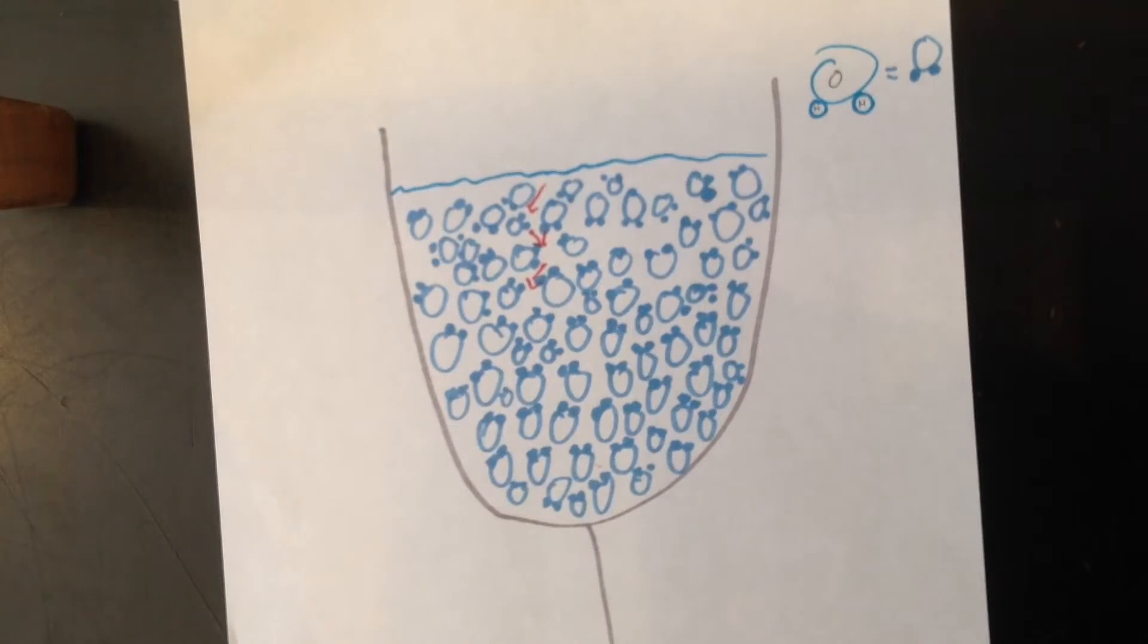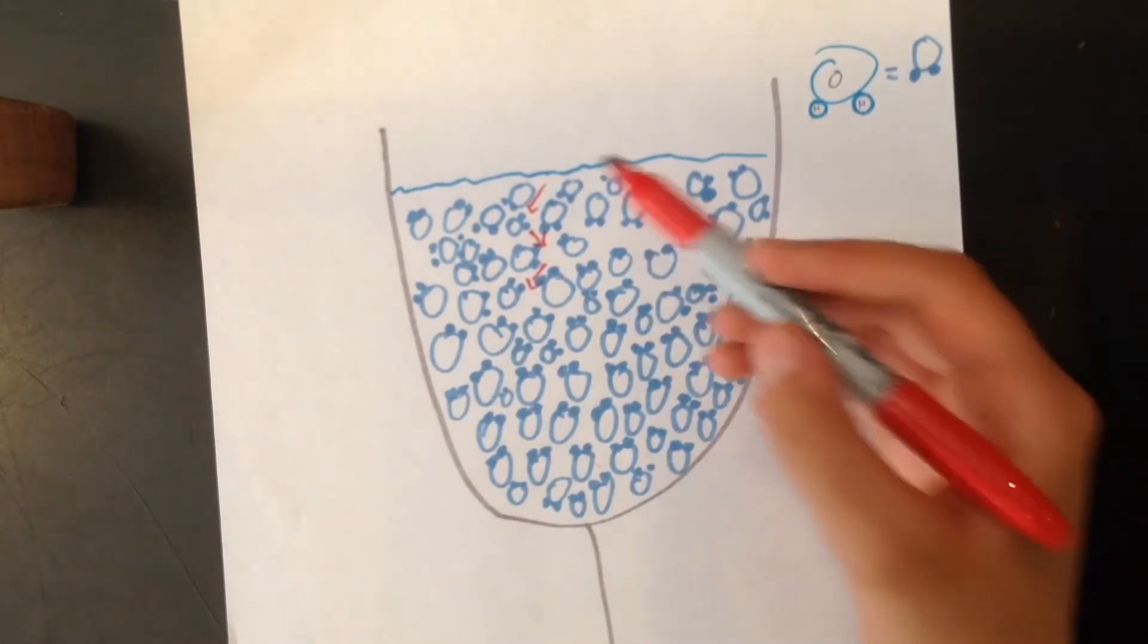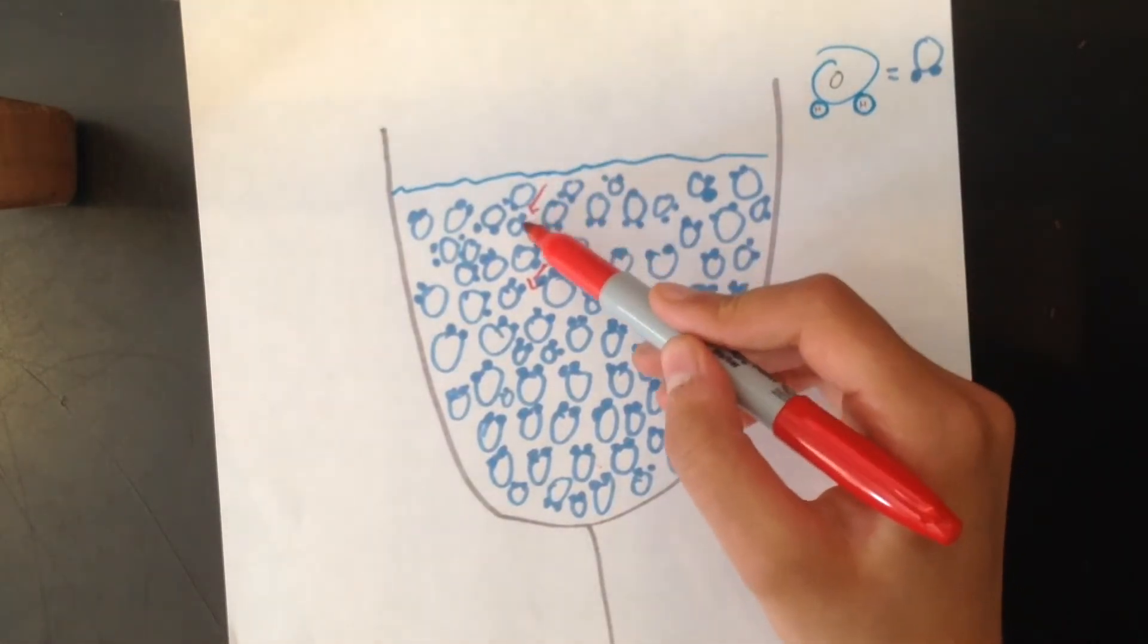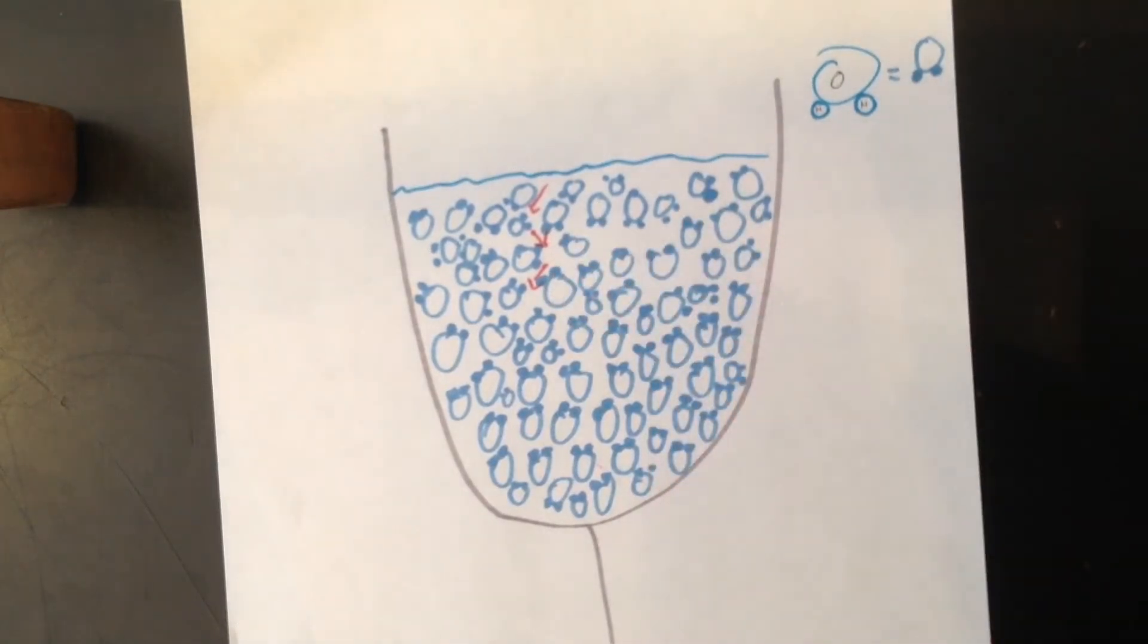But in reality, the red dye particles would actually collide with the water particles. So they would follow the arrows a little bit, and eventually it would result in uniform dispersal.